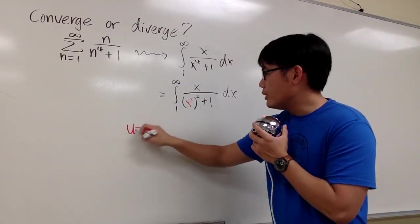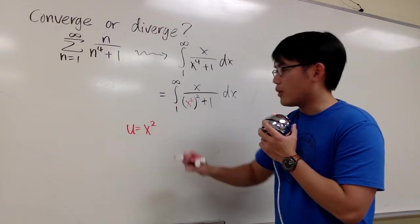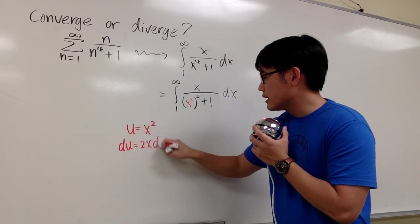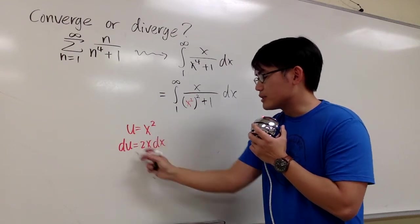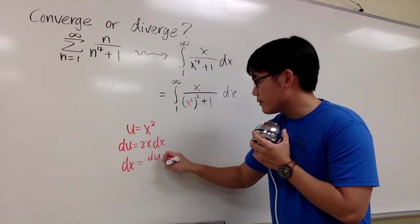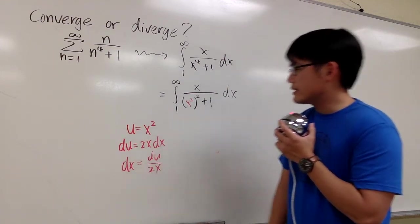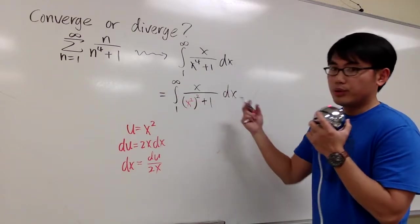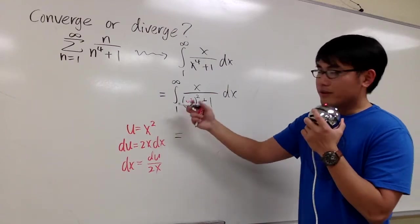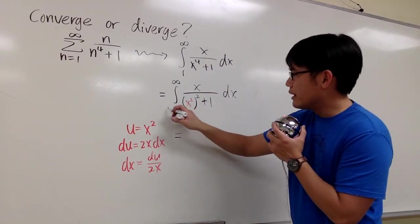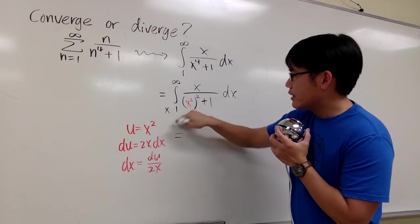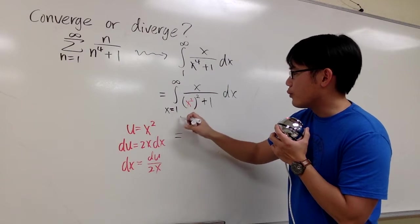Let u equal x squared. Differentiating both sides, we get du equals 2x dx, and then dividing both sides by 2x, we have dx equals du over 2x. We also have to change the limits: this 1 is when x goes from 1, so when x is 1, u equals 1 squared, which is just 1.